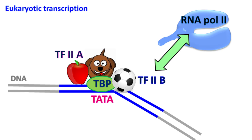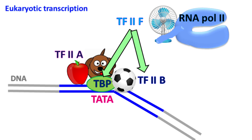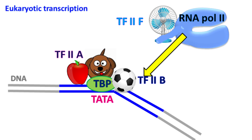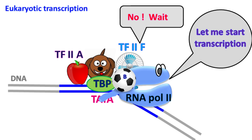RNA polymerase cannot bind the promoter on its own. The transcription factor TF2F helps RNA polymerase II to bind the promoter. TF2F interacts with TBP and TF2B while recruiting RNA polymerase II. TF2F also prevents RNA polymerase from contacting DNA outside the promoter.